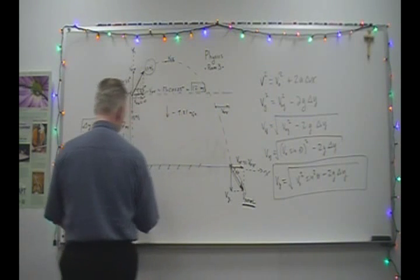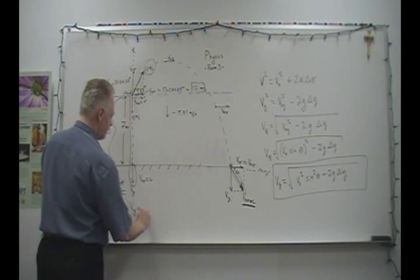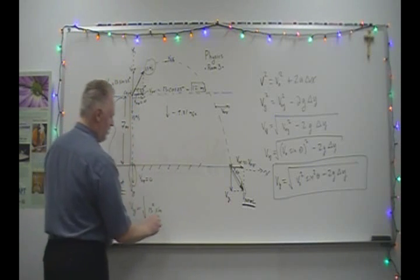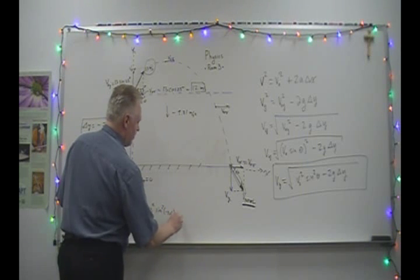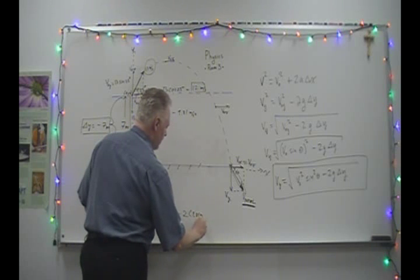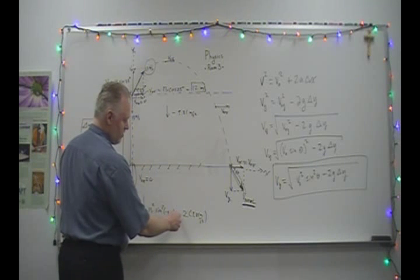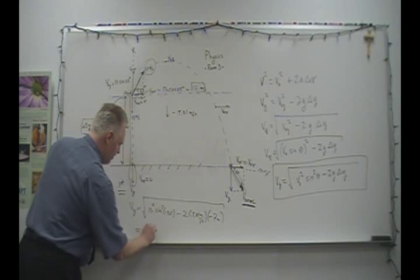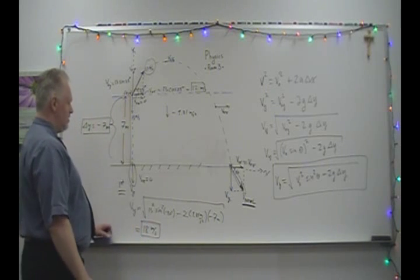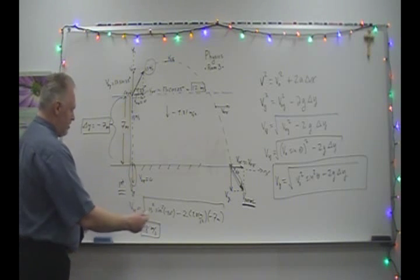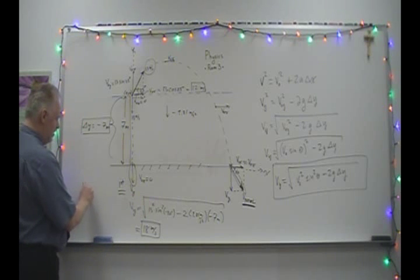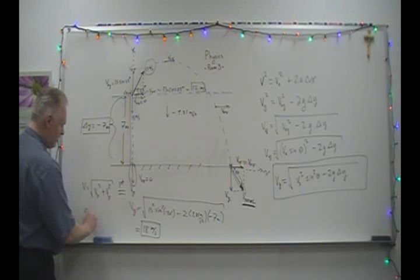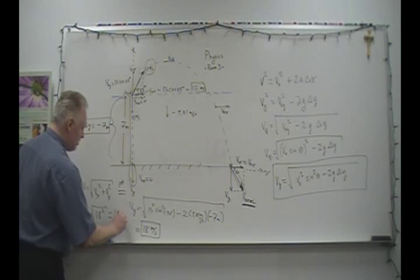Applying it to the first snowball: I put in 13 squared times sine squared of negative 90 degrees, minus 2 times 9.81 times the displacement of negative 7 meters — the negative times negative makes this positive. When I work this out, it rounds to about 18 meters per second. Since there's no V_0x for this snowball, combining the components using the Pythagorean theorem gives: square root of 0 squared plus 18 squared, which is just 18 meters per second.